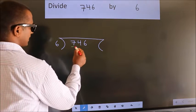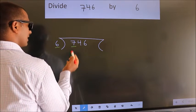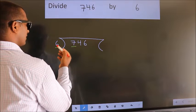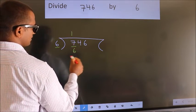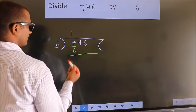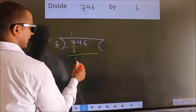Here we have 7, here 6. A number close to 7 in 6 table is 6 ones, 6. Now we should subtract. We get 1.